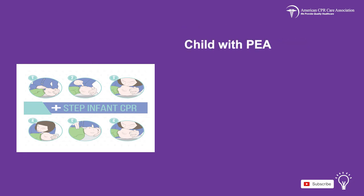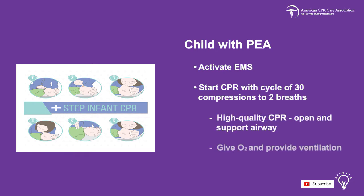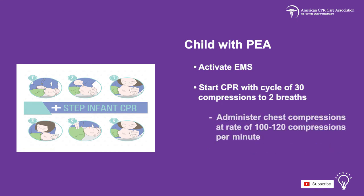After recognizing that a child exhibits signs of asystole or PEA, implement the following steps for treatment. Immediately activate EMS and start CPR with a cycle of 30 compressions to 2 rescue breaths. For high-quality CPR, open and support the airway, give oxygen and provide ventilation if necessary, and administer chest compressions at a rate of 100 to 120 compressions per minute.